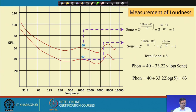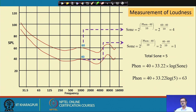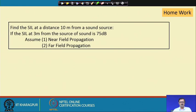That concludes lecture 5, covering near and far field propagation and loudness. This fifth lecture also concludes the first week of the architectural acoustics course. The five lectures together covered historical development of sound and four lectures of pure acoustical and building physics. For homework, try finding the SPL at 10 meters from a source, given that the SIL at 3 meters is 75 dB — solve for both near field (cylindrical) and far field (spherical) propagation.